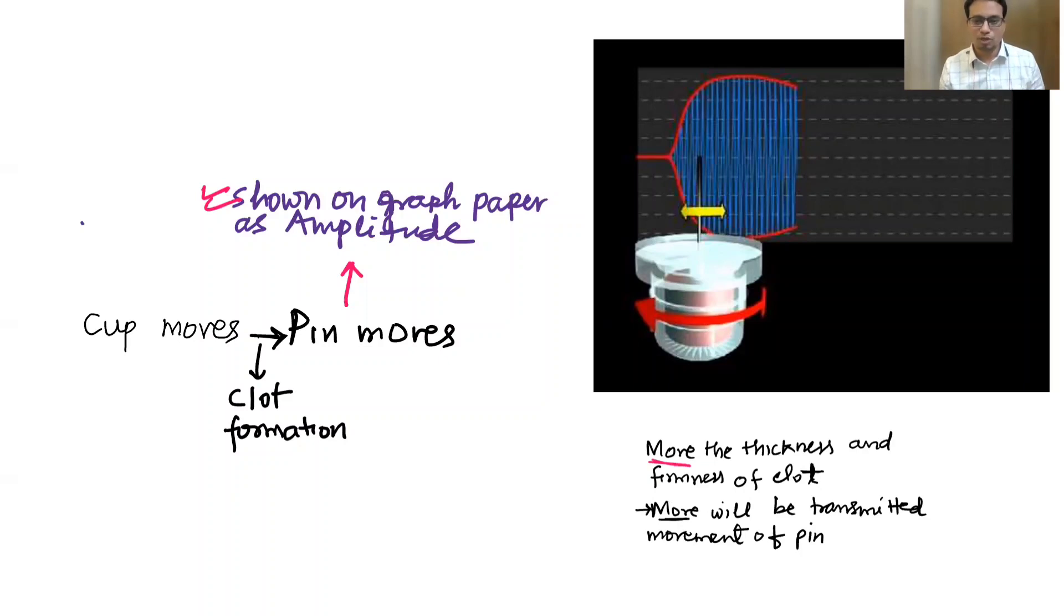Once the clot starts forming, the pin starts moving and it is shown on the graph paper as amplitude. The more the pin movement, the more will be the amplitude. As time passes, clot thickens. It can give you information about how fast clot is formed and how the clot is retracting or degrading.